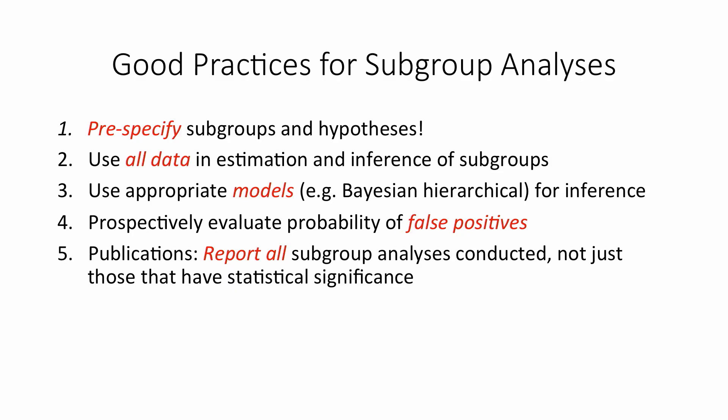Fifth, when you publish your results, be sure to report all subgroup analyses you conducted, not just those that have statistical significance. This transparency will allow the scientific community to better interpret your results. With careful planning, we can do a lot better than just an average effect — we can provide effects in multiple subgroups that have scientific credibility. Thank you.